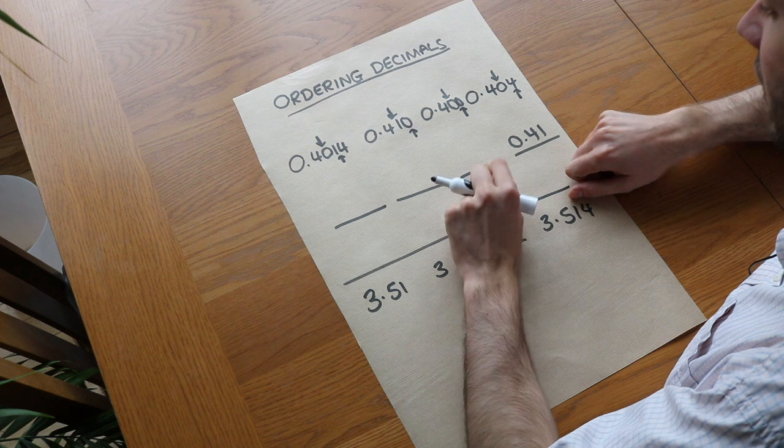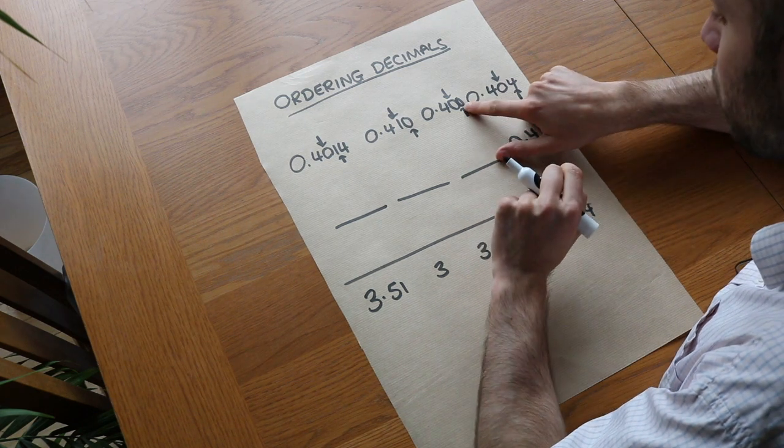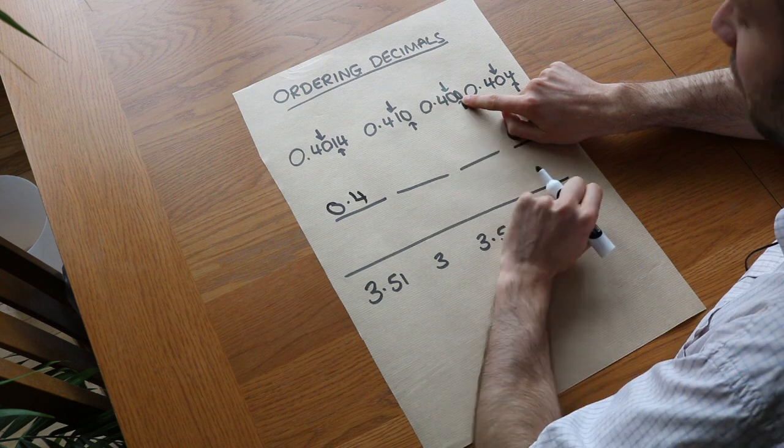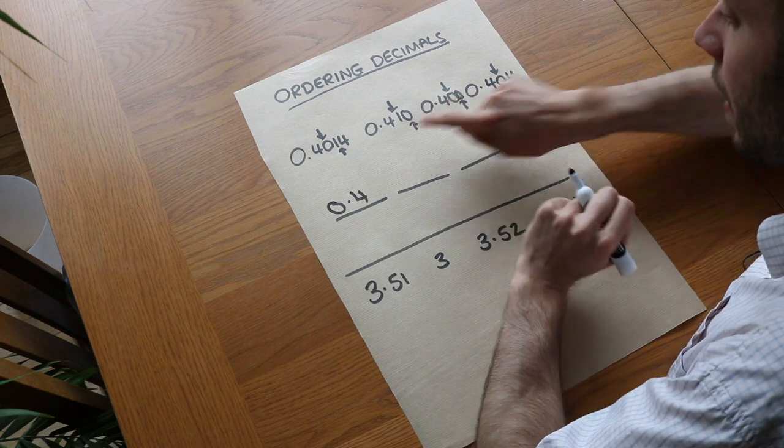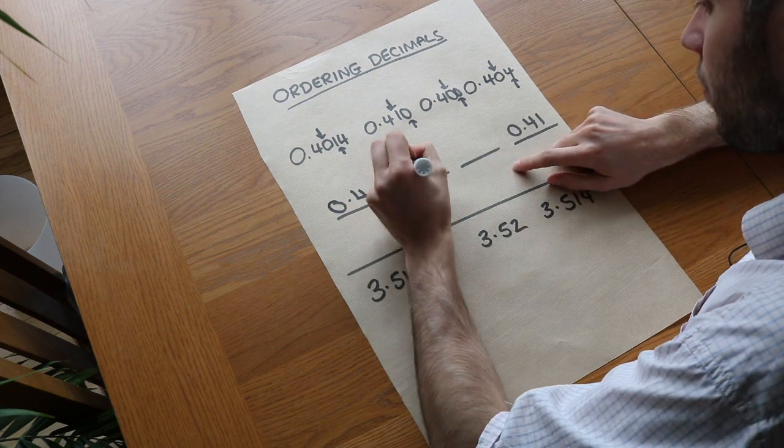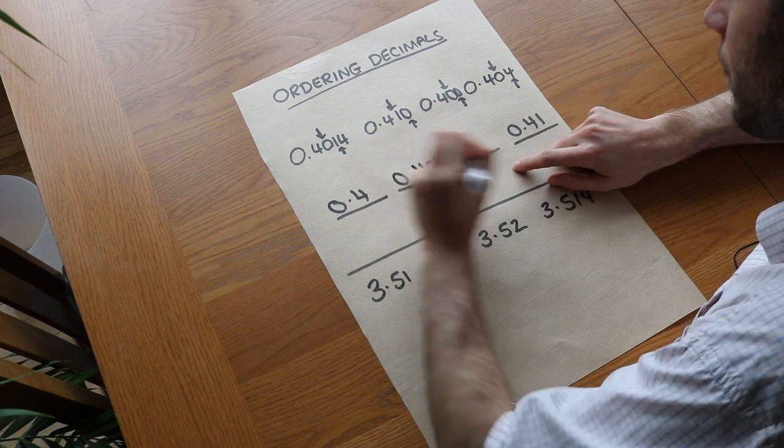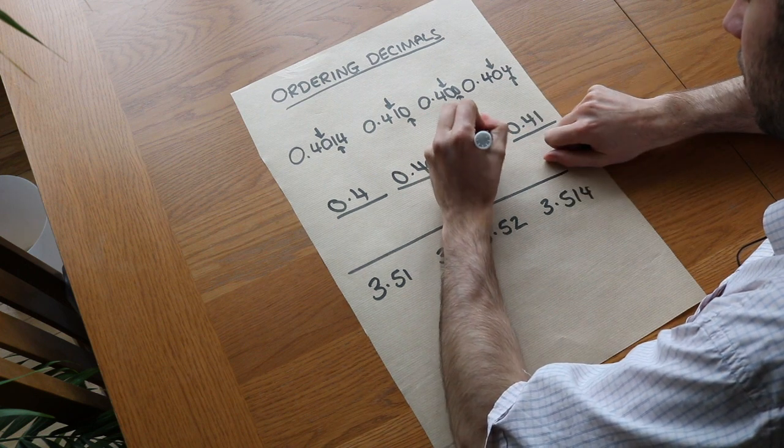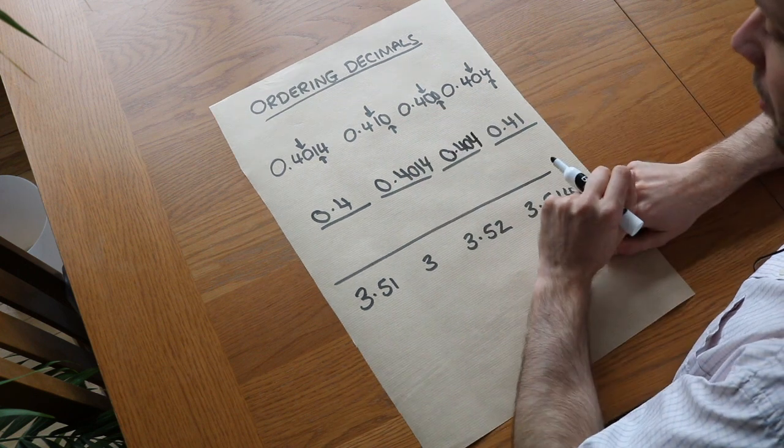And now we can order these because we know that zero is the smallest so we can put 0.4, which is the original number before I added the zeros on the end, and then the next biggest number is one so we got 0.4014, and then it's that one next so 0.404 and there we go they're in ascending order.